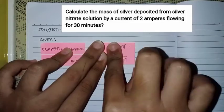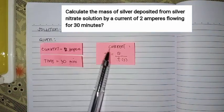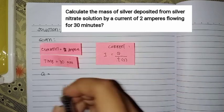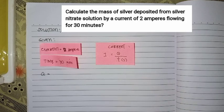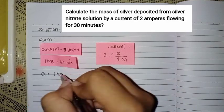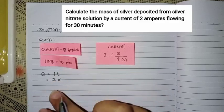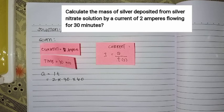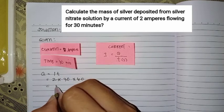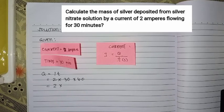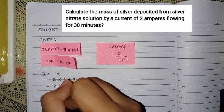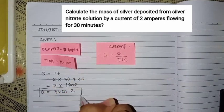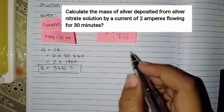The first step is the same formula. Since we have current and time, we use charge equals current times time. We have a current of 2A times 30 times 60. We multiply by 60 to convert minutes into seconds. That equals 2 times 30 times 60 which is 1,800, then times that is 3,600. Our charge is 3,600 coulombs.